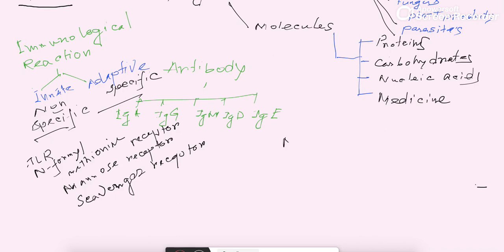In case of adaptive immunity, there are specific receptors like immunoglobulins (IgG) and T cell receptors, which are present in the blood. So there are two main types of immunological reactions: innate (inborn, nonspecific) and adaptive (activated after infection, very specific). Innate immunity has toll-like receptors, n-formyl methionine receptor, mannose receptor, and scavenger receptors; adaptive immunity has immunoglobulins and T cell receptors specific to particular antigens.